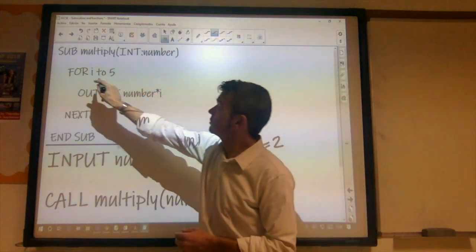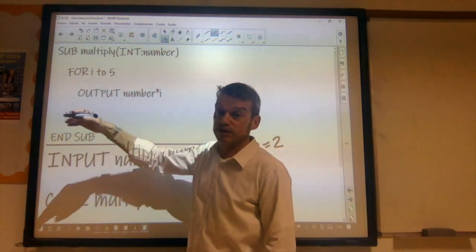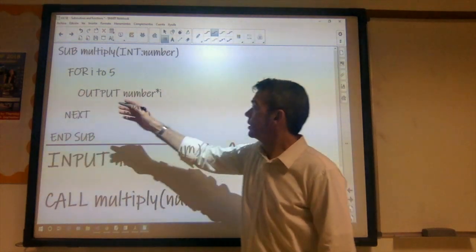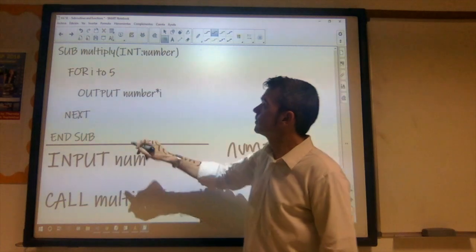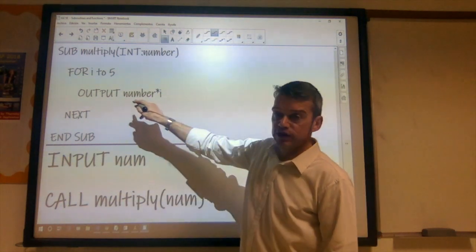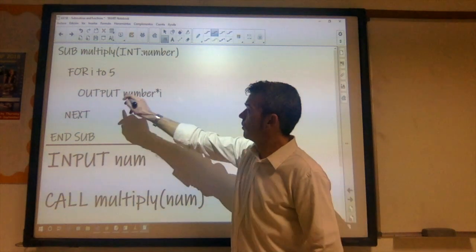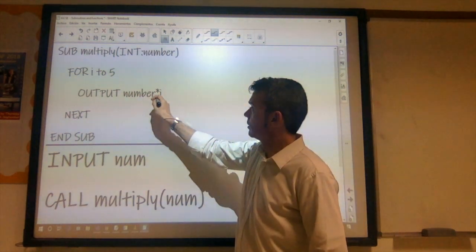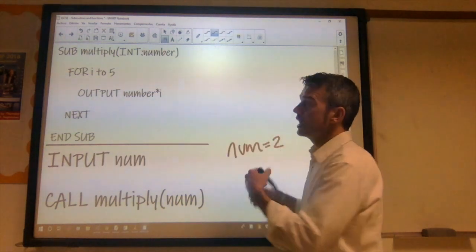So now we get to this for loop. Okay, now I is a type of counter. Okay, so I will start at about 1 and go through to 5. And then we execute the line of code. So I starts as 1. So we output number times I. So 2 times 1, we output 2.